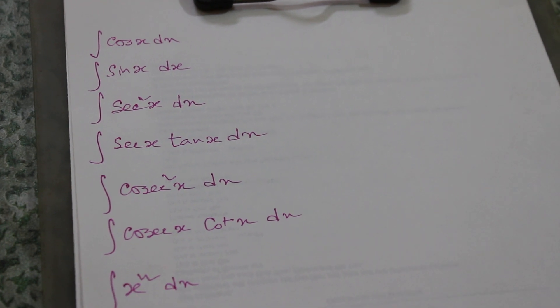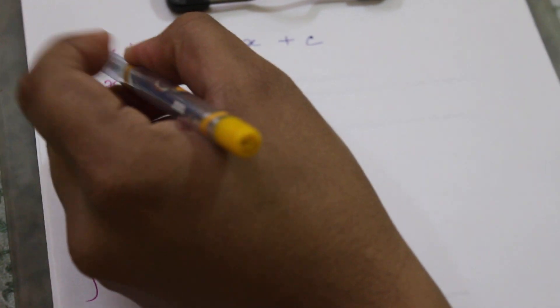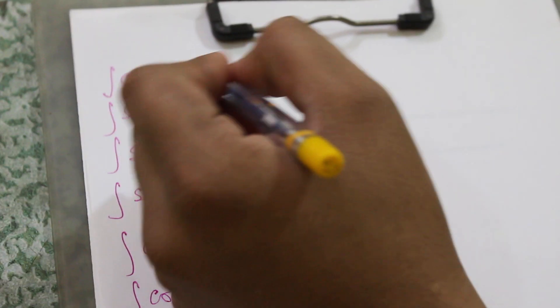Hi friends, welcome to our channel Learn to Win. Today we will discuss basic integration formulas. First, we will discuss integration of cos x with respect to dx — it will be sin x plus c, where c is the integration constant. Integration is just the reverse process of differentiation: if we differentiate sin x we get cos x, so if we integrate cos x we get sin x.